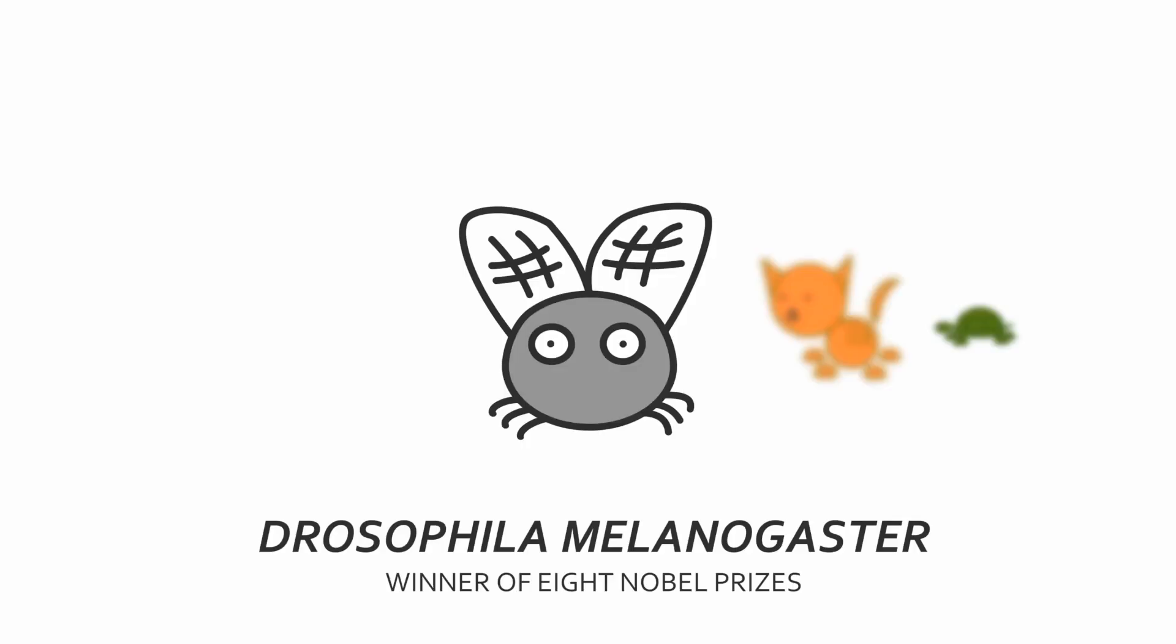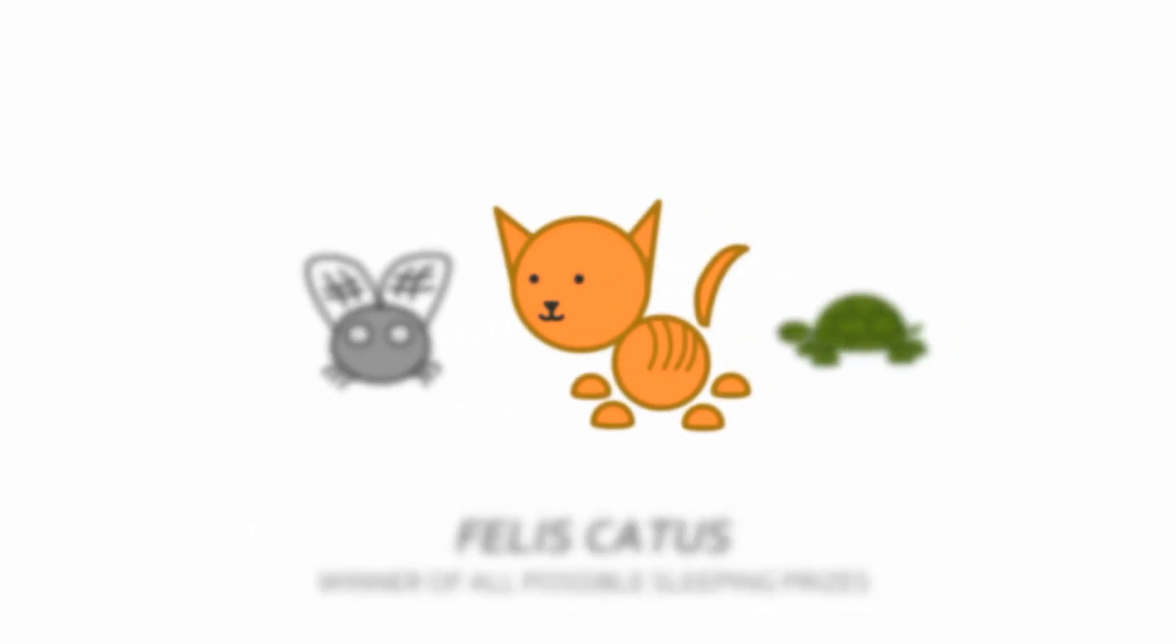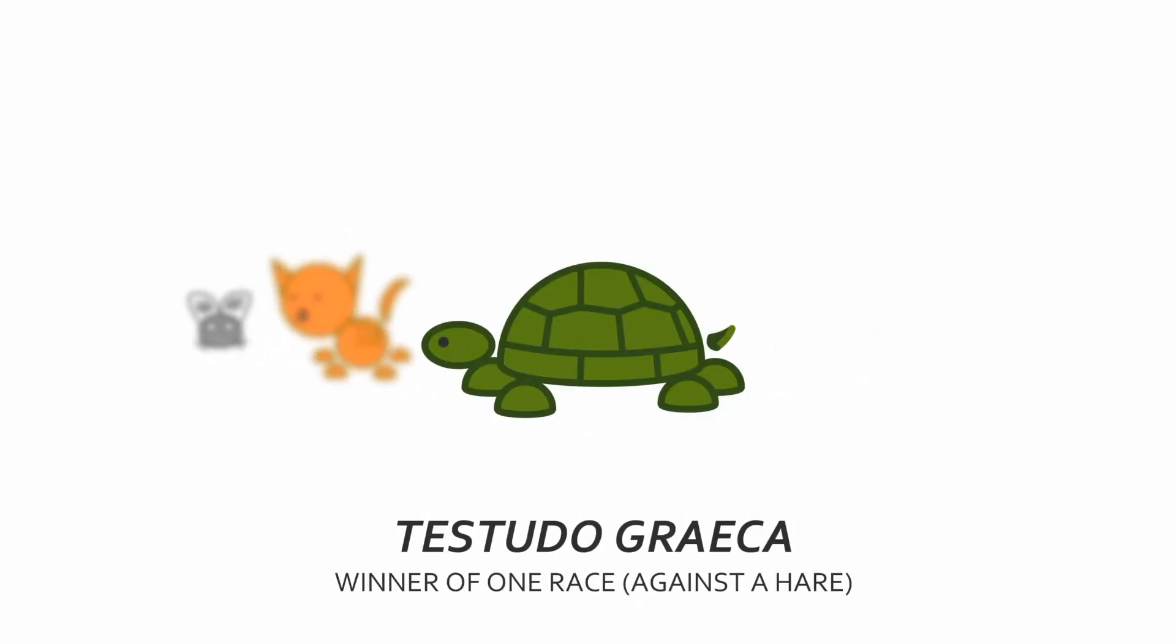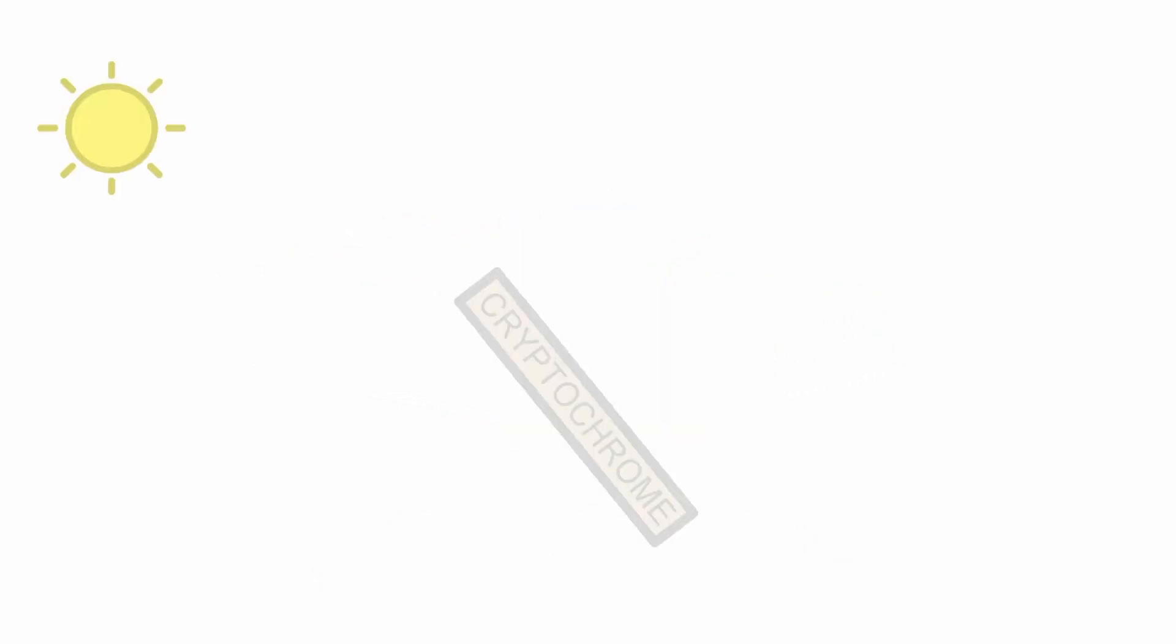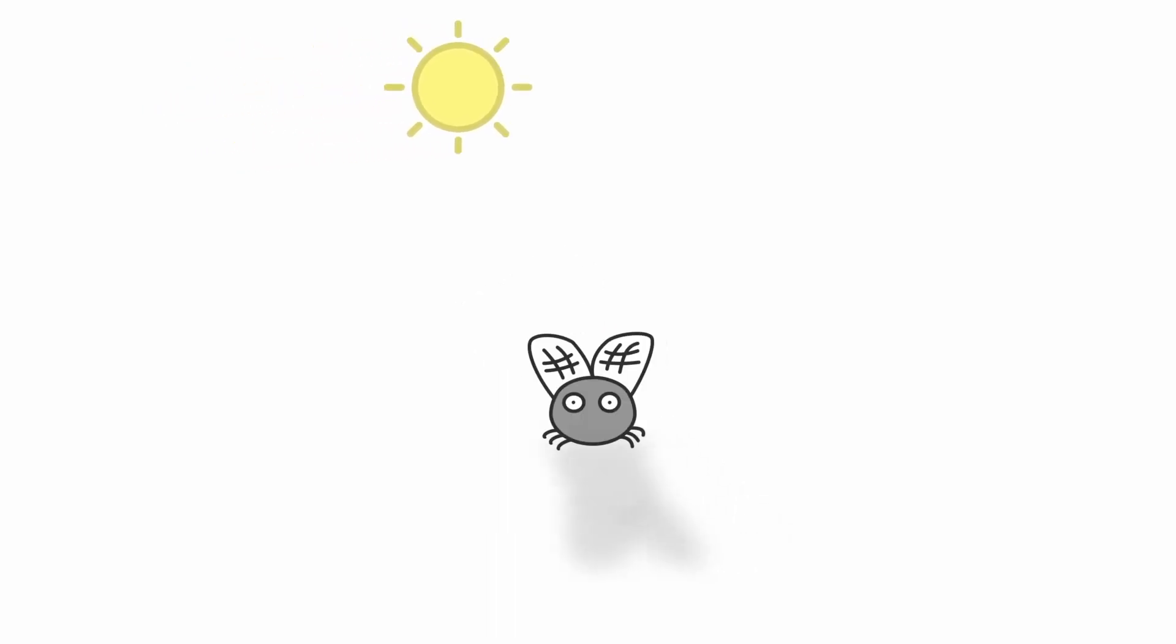While these systems were discovered in the fruit fly, further research shows that this system works in almost all species. Except for one thing. In the last part of the cycle, Cryptochrome is activated by light. In flies, that's no problem, because light shines practically through their bodies, allowing the sun to directly regulate their whole system.